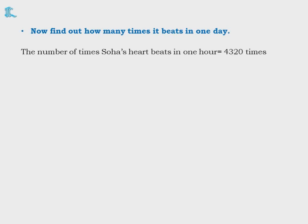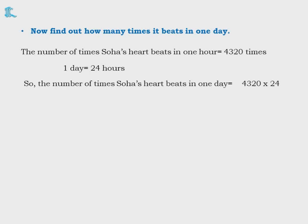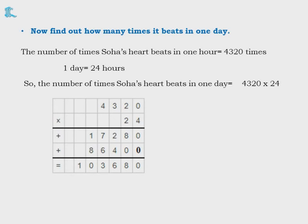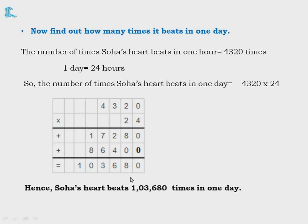Now find out how many times it beats in one day. 1 hour = 4,320 beats, and 1 day = 24 hours. So 4,320 into 24: 4 zeros are 0, 4 twos are 8, 4 threes are 12 — write 2 carry 1, 4 fours are 16 plus 1 is 17. Then with 2: place a 0, 2 zeros are 0, 2 twos are 4, 2 threes are 6, 2 fours are 8. Adding gives 1,03,680 beats in one day.